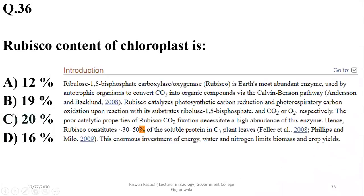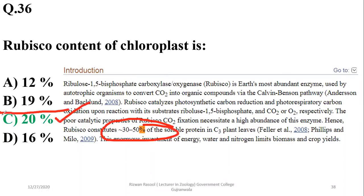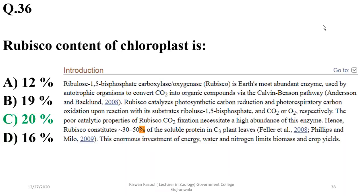Question 35: Rubisco content of the chloroplast — there is no perfect answer, but looking at leaf protein in total C3 plants, 30 to 50% of soluble protein is Rubisco. Going for the highest number. If you have a better reference, please mention it in the comments.